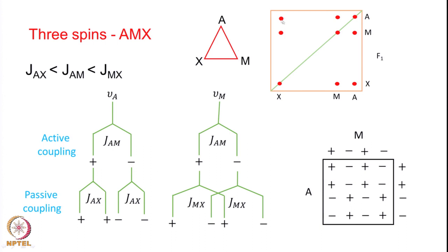Similarly, for the AX cross peak, JAX is the active coupling and JMX is the passive coupling. For the MX cross peak, JMX is the active coupling and JAM is the passive coupling. In all cross peaks, one coupling is active - producing plus-minus splitting - and the others are passive - producing plus-plus in-phase splitting. Active coupling leads to plus-minus splitting and passive coupling leads to further plus-plus splitting, resulting in different fine structures for each cross peak accordingly.